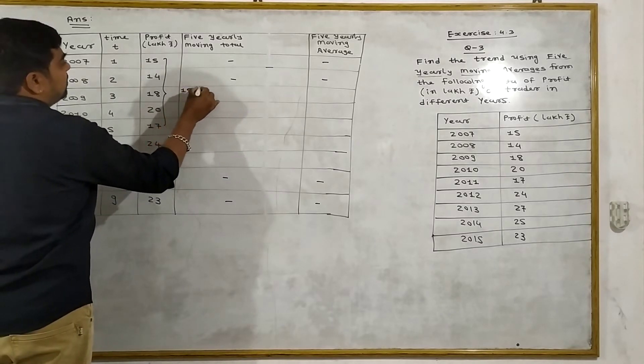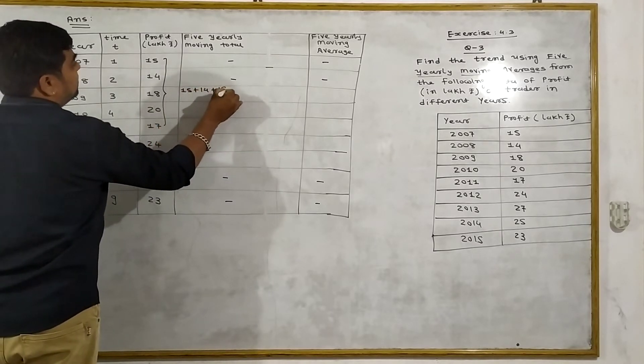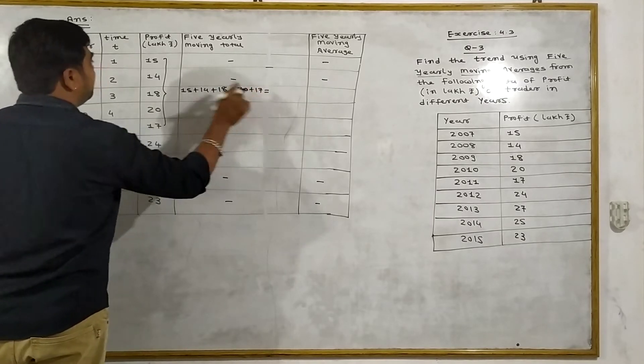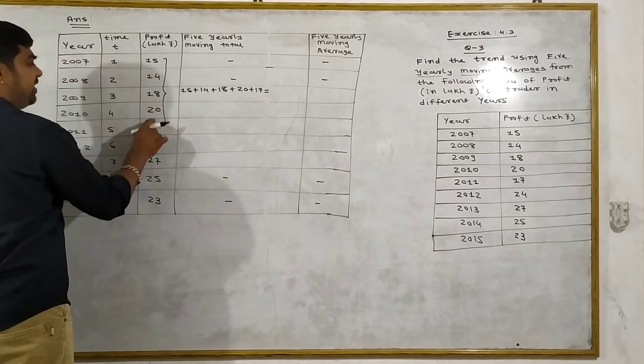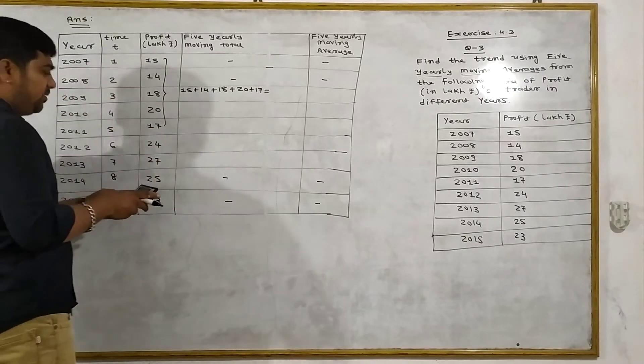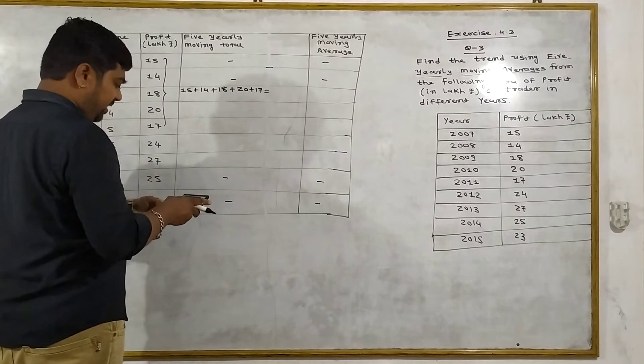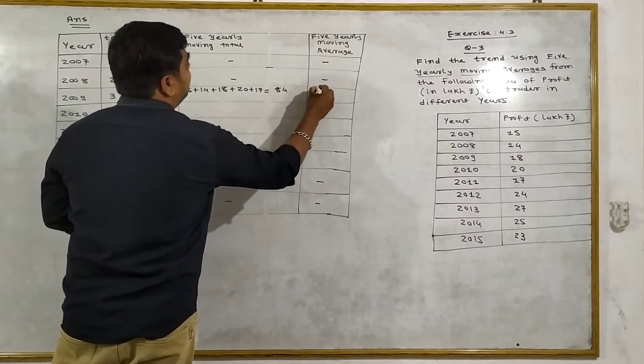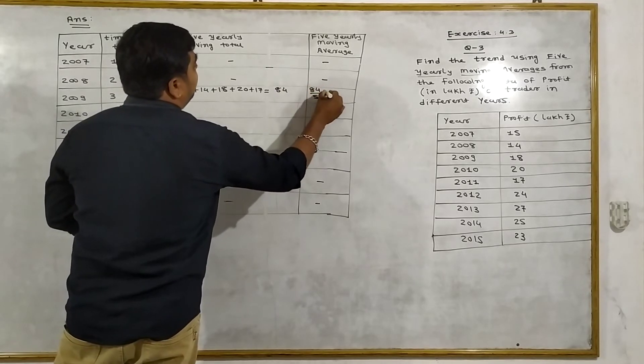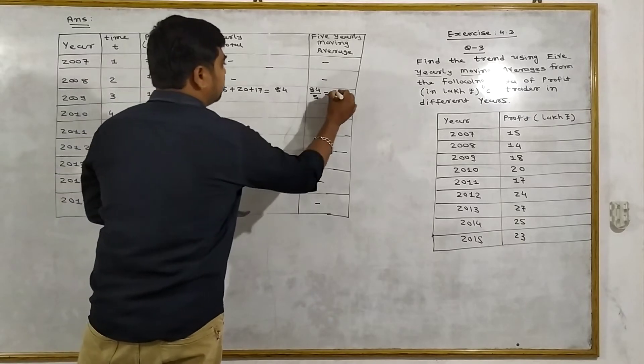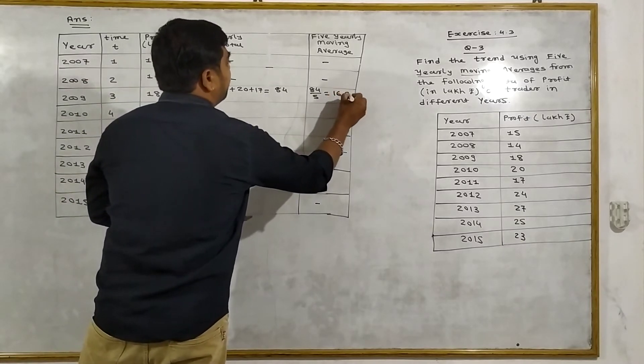15 plus 14 plus 18 plus 20 plus 17. The total is 84. The 5 year moving average is 84 divided by 5, which equals 16.8.